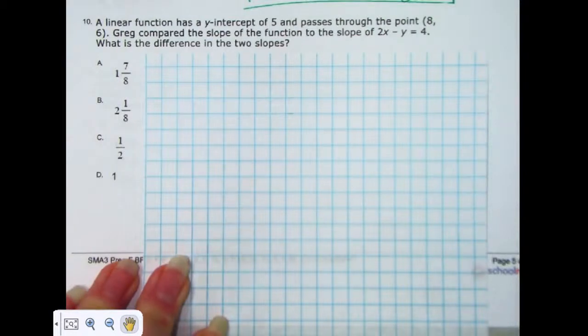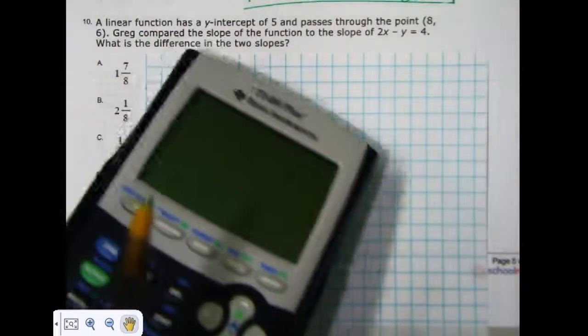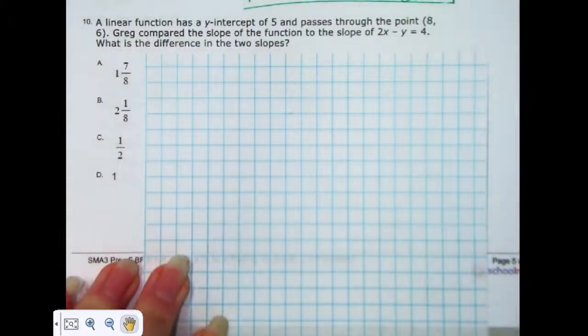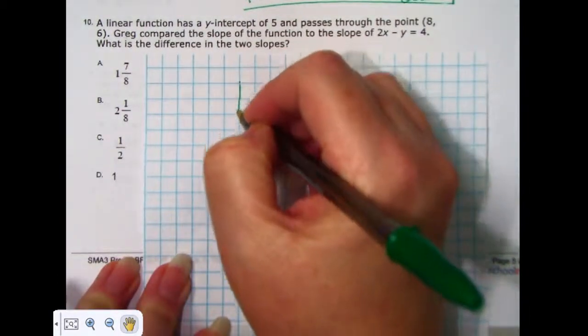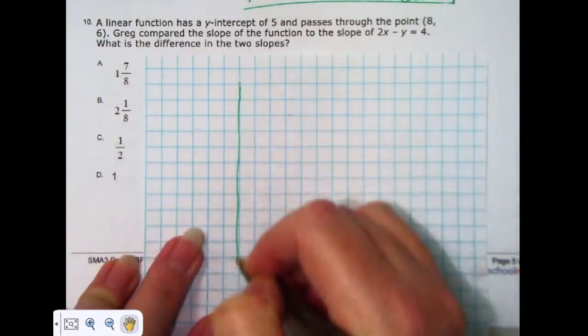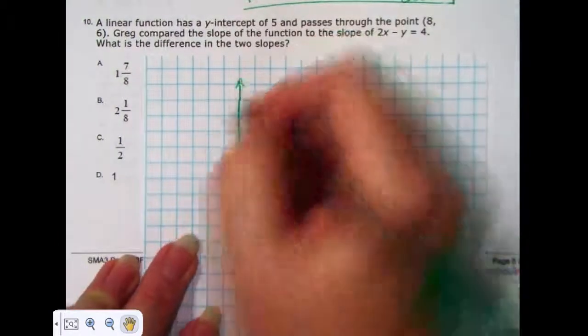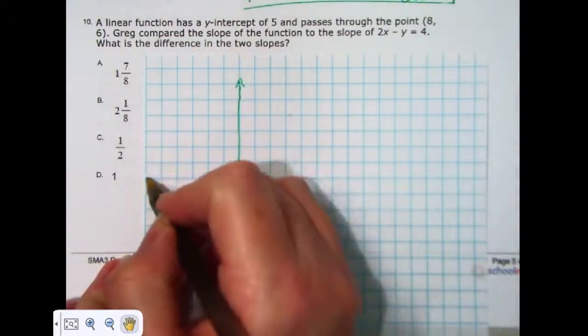So, although you get to use a calculator, the calculator won't do everything for you. So, the first part of the problem, you have a linear function that goes through, it has a y-intercept of 5.